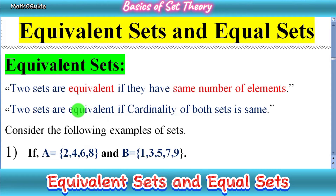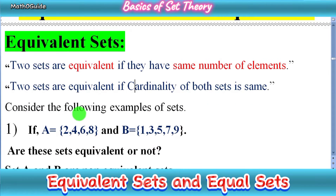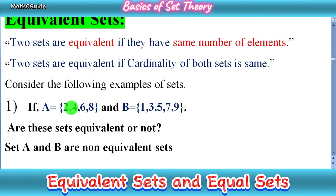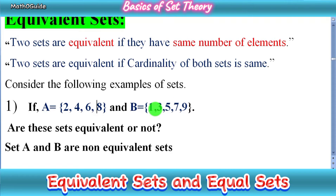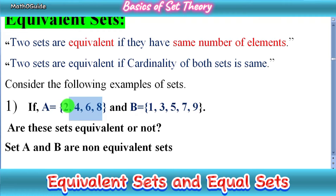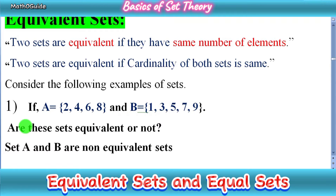Let's consider some examples. First, we have set A with four elements: {2, 4, 6, 8}, and set B with five elements: {1, 3, 5, 7, 9}. We have to check whether these sets are equivalent or not. Set A and B are not equivalent sets because they have a different number of elements — four in set A and five in set B.